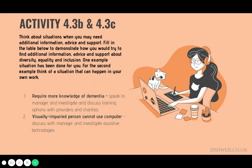The final question asks you to complete the table identifying when and where you would look for additional information in situations relating to equality and diversity, and whom you may speak to. The first situation is identifying a learning need to expand your knowledge about dementia to support an individual's communication needs — something to discuss with your manager informally or during supervision or appraisal, and by researching training options. For the second situation, the example given involves a visually impaired individual unable to use a communal computer in a residential home. They are being discriminated against because they lack the same opportunity as other residents. Solutions include looking into hardware and software such as a screen reader or magnifier, speaking to experts, then presenting options to your manager.